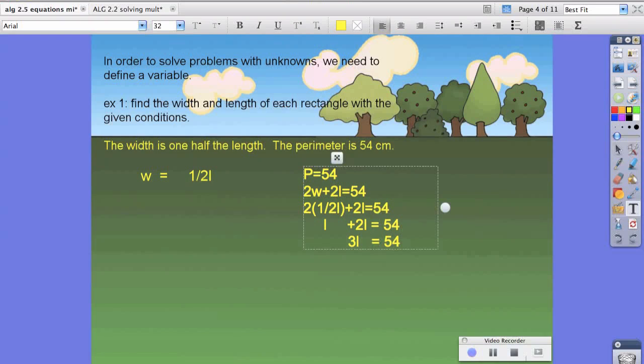In order for us to isolate the variable, we're going to divide by three to both sides. That's going to tell us that the length equals 18. And because the width is half of the length, we know that w, or the width, equals 9.